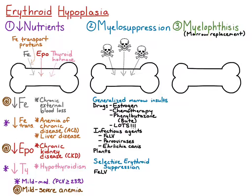Often these FeLV-infected cats also have a macrocytosis, so the MCV can be really high without there being regeneration. There can also be immune-mediated destruction of red cell precursors, where there is immune attack of any stage of red cell precursors, resulting in a non-regenerative immune-mediated hemolytic anemia.